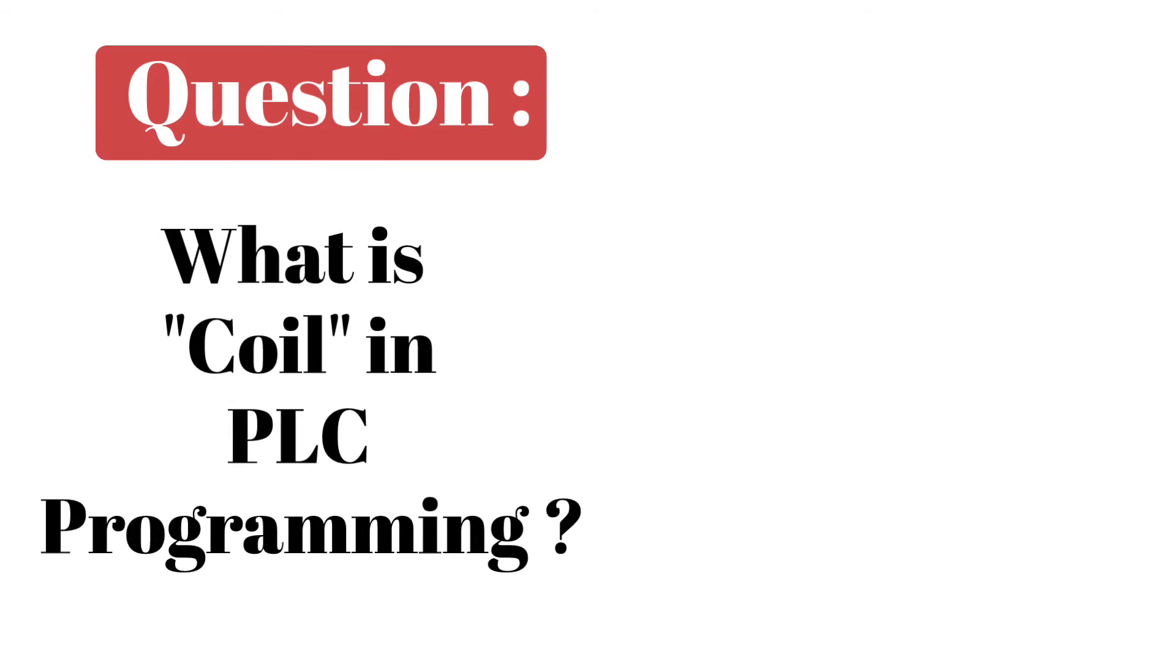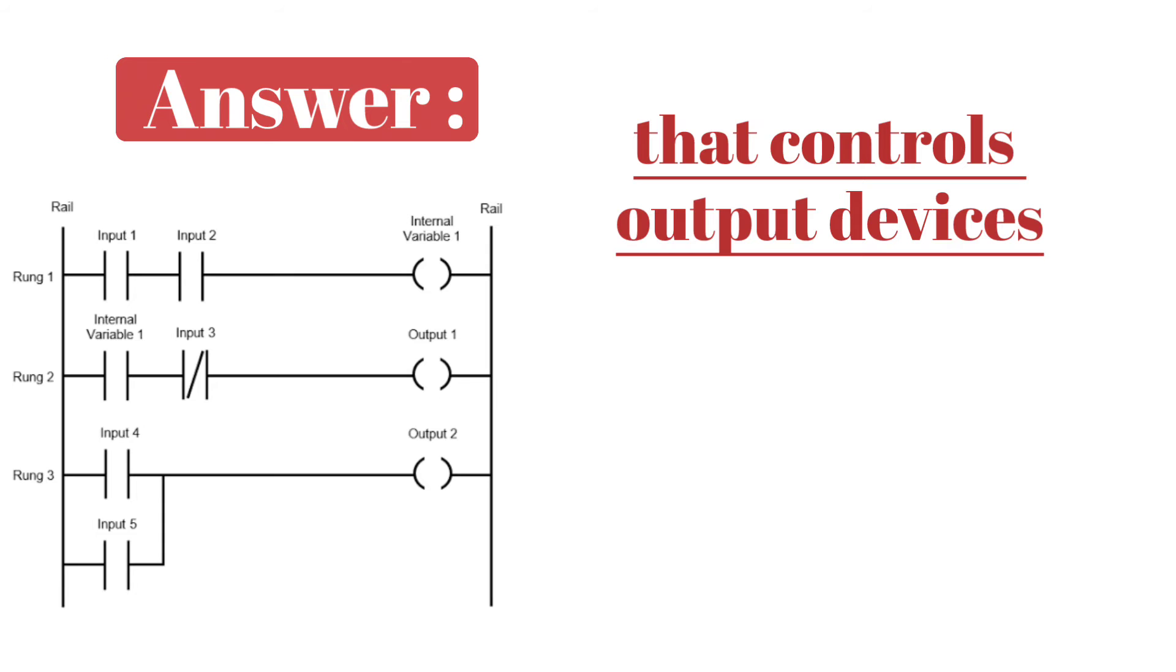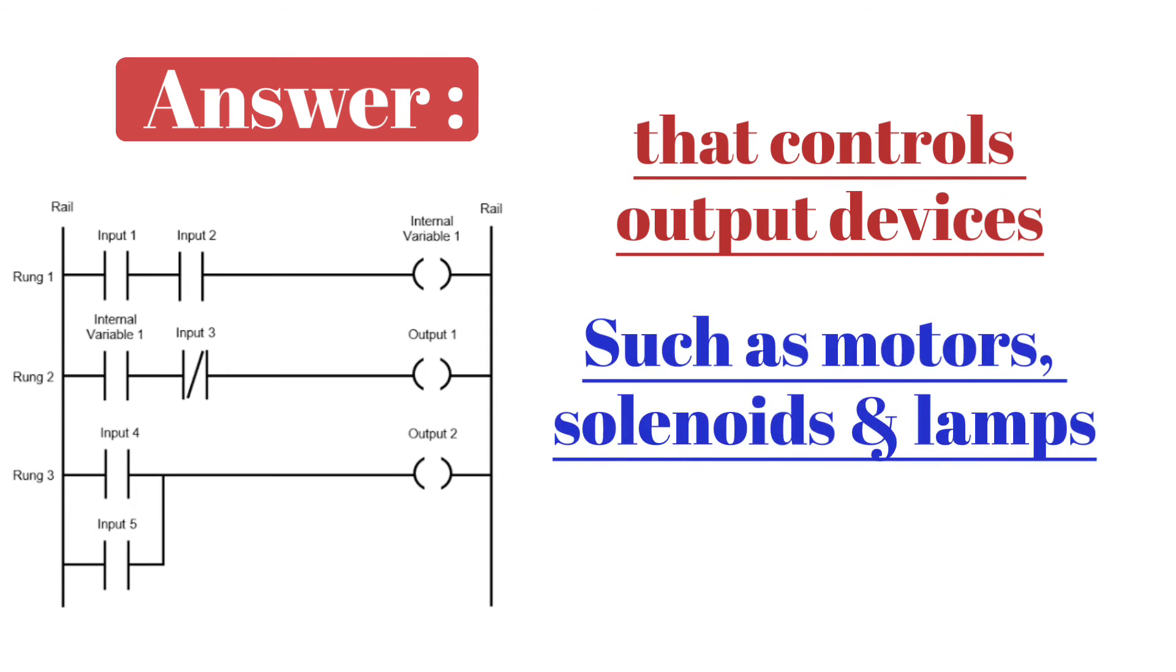Next question is, what is coil in PLC programming? Answer is, coil in PLC programming is an output instruction that controls output devices such as motors, solenoids, and lamps.